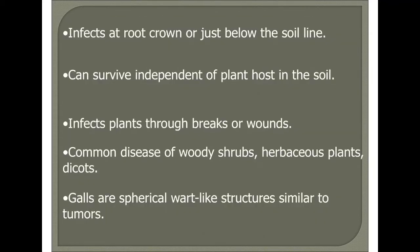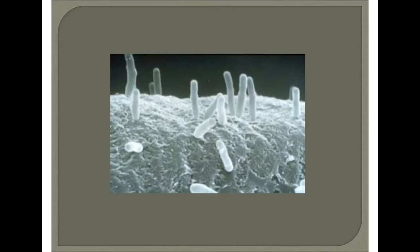Infection occurs at the root, crown, or just below the soil line. The bacteria can survive independently of plant hosts in the soil and infect plants through breaks or wounds. Common disease hosts include woody shrubs, herbaceous plants, and dicots. Galls are spherical, rot-like structures similar to tumors, and infection takes place only through cuts. This is a scanning electron microscopic view of Agrobacterium tumefaciens.